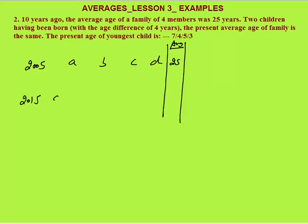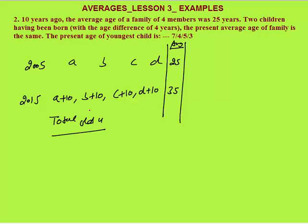Each person a, b, c, and d will become 10 years older in 2015 — ages will be a+10, b+10, c+10, and d+10. Each observation increased by 10, so the average also increases by 10, giving a present average of 35 years. The total present age of the original four members would be 35 into 4 equals 140 years.